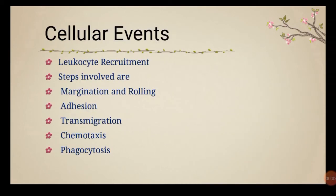Next, cellular events — very important and essential to understand. In cellular events, leukocyte recruitment occurs in five steps: (1) margination and rolling, (2) adhesion, (3) transmigration, (4) chemotaxis, and (5) phagocytosis.